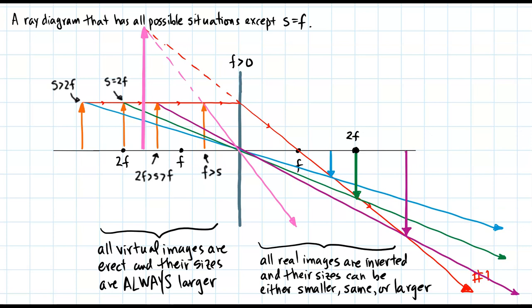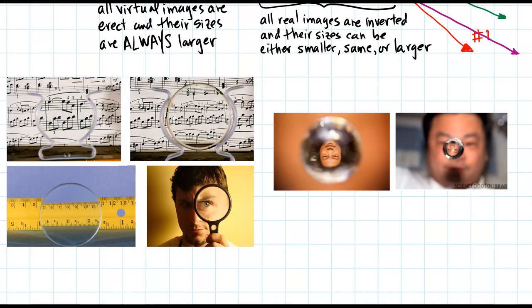Let's look at some real-world examples. A spherical bubble of water acts like a lens due to its curved surface. The inverted and smaller image inside it means the object must be outside of 2F. The images on the left are virtual because they are erect.